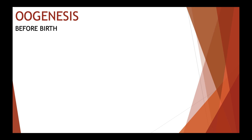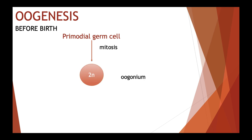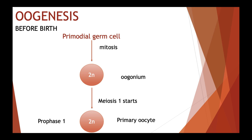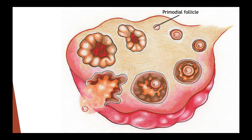Oogenesis begins in the female embryo before birth with the mitotic division of primordial germ cells, which gives rise to oogonia. The oogonia then divide by mitosis to form cells that begin meiosis, but this stops at prophase I. Before birth, the egg cells are stopped at prophase I — their development is paused — and these cells are called primary oocytes. Each primary oocyte is found within a small follicle known as the primordial follicle, which is a cavity lined with protective cells.